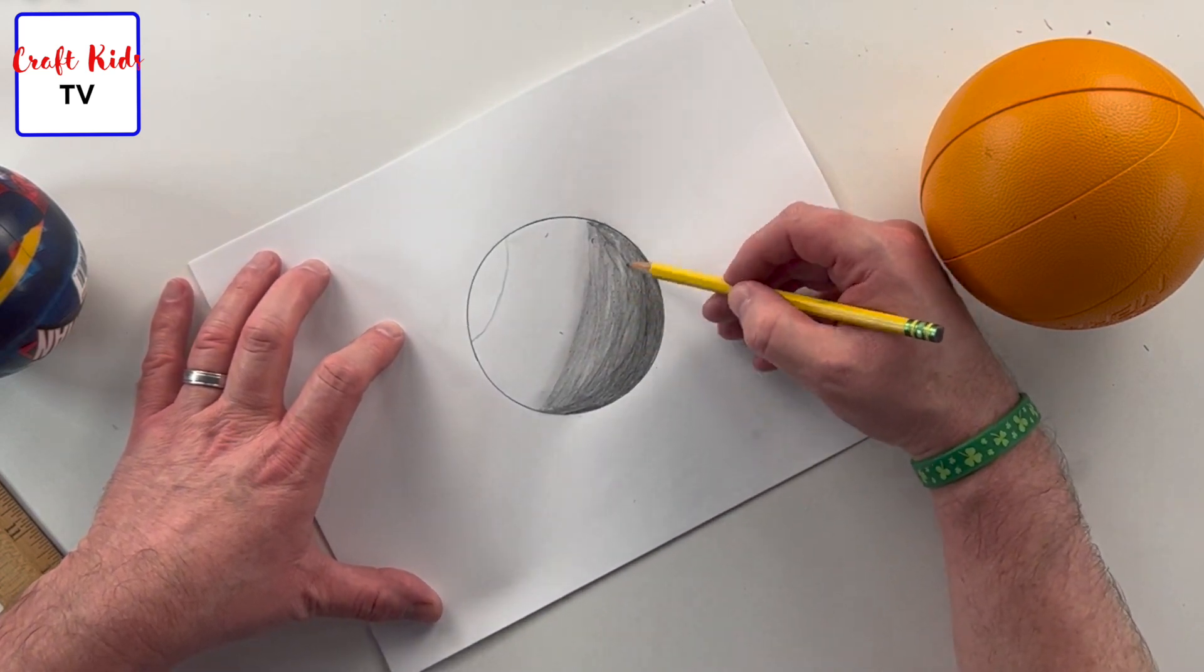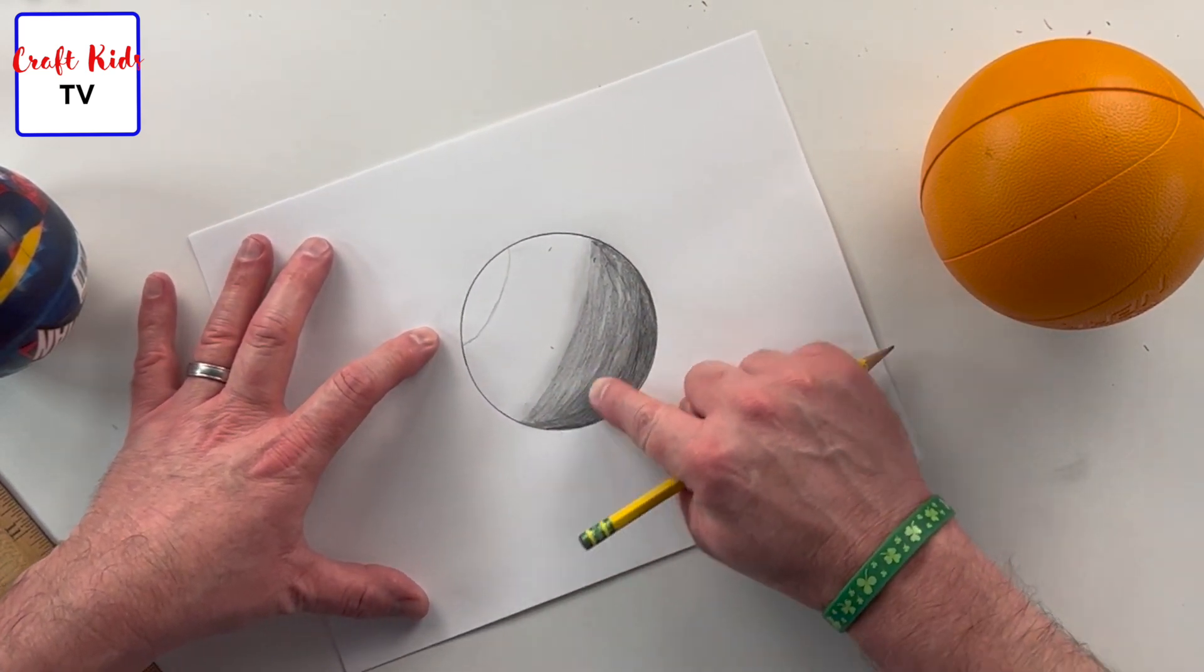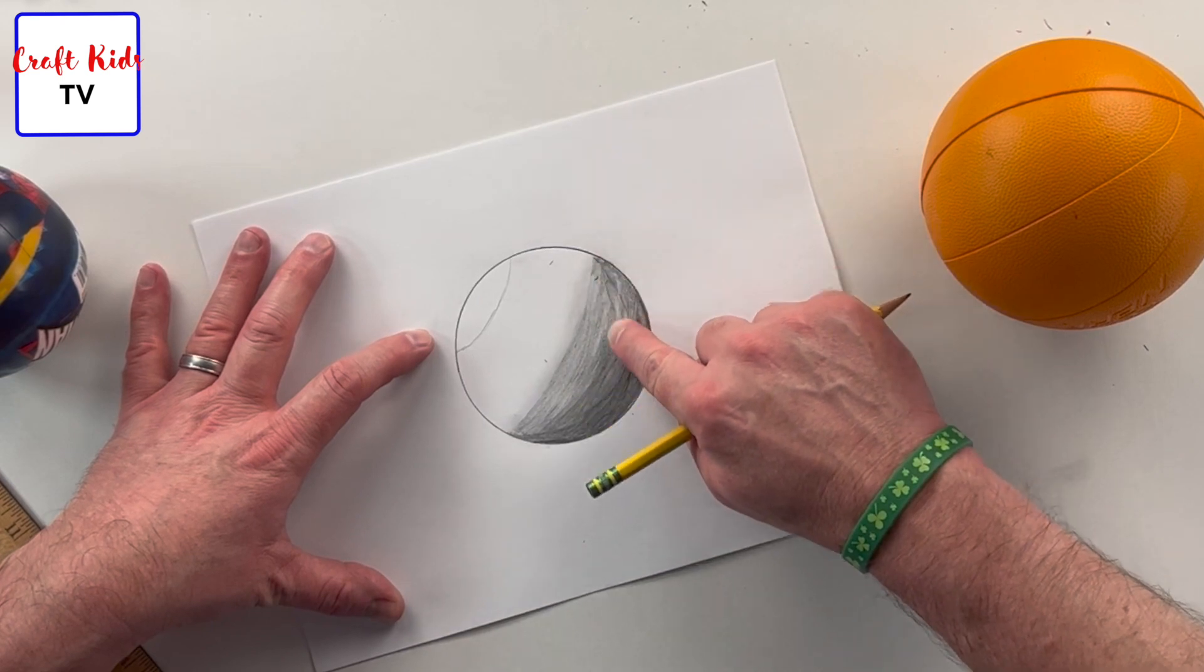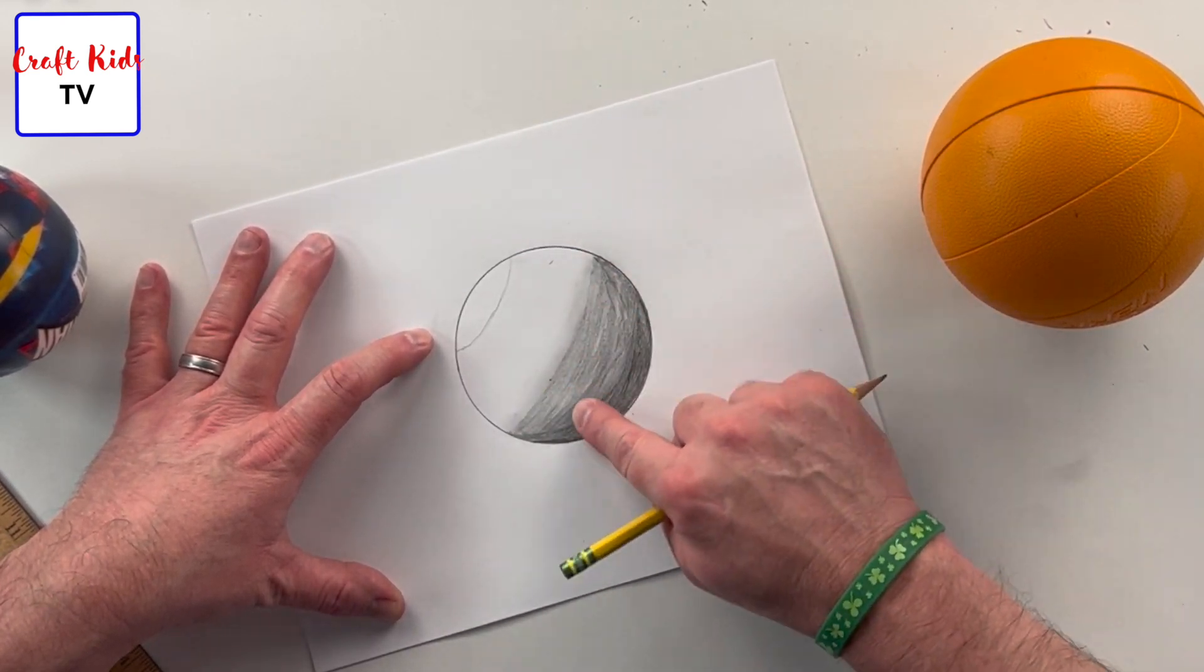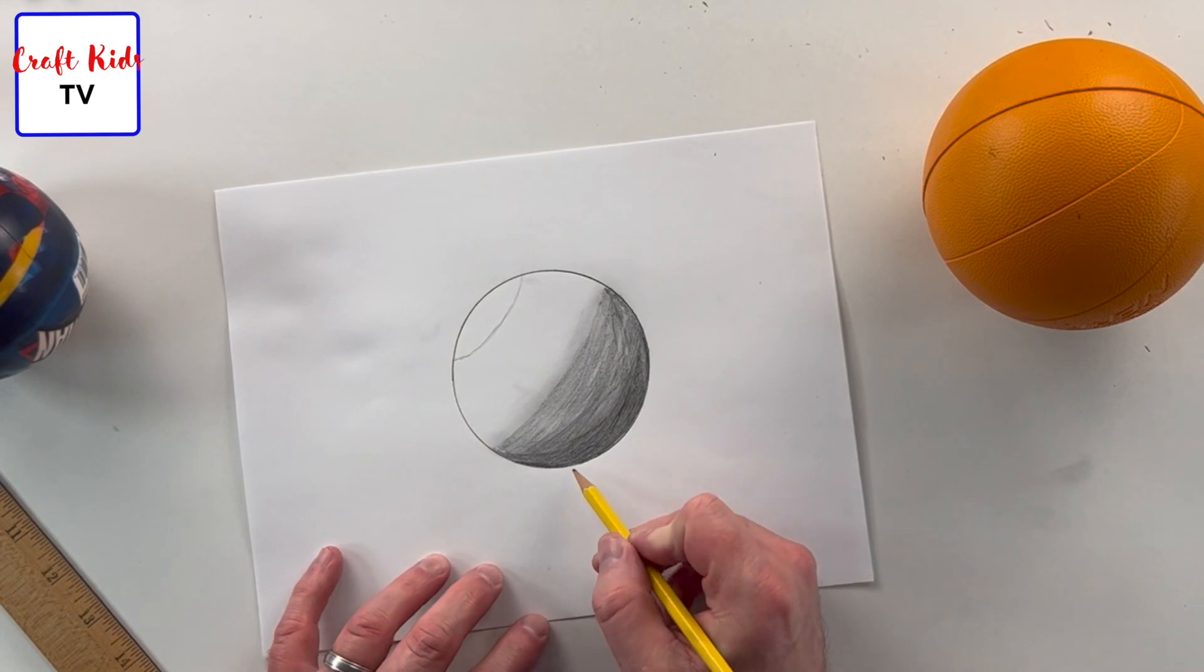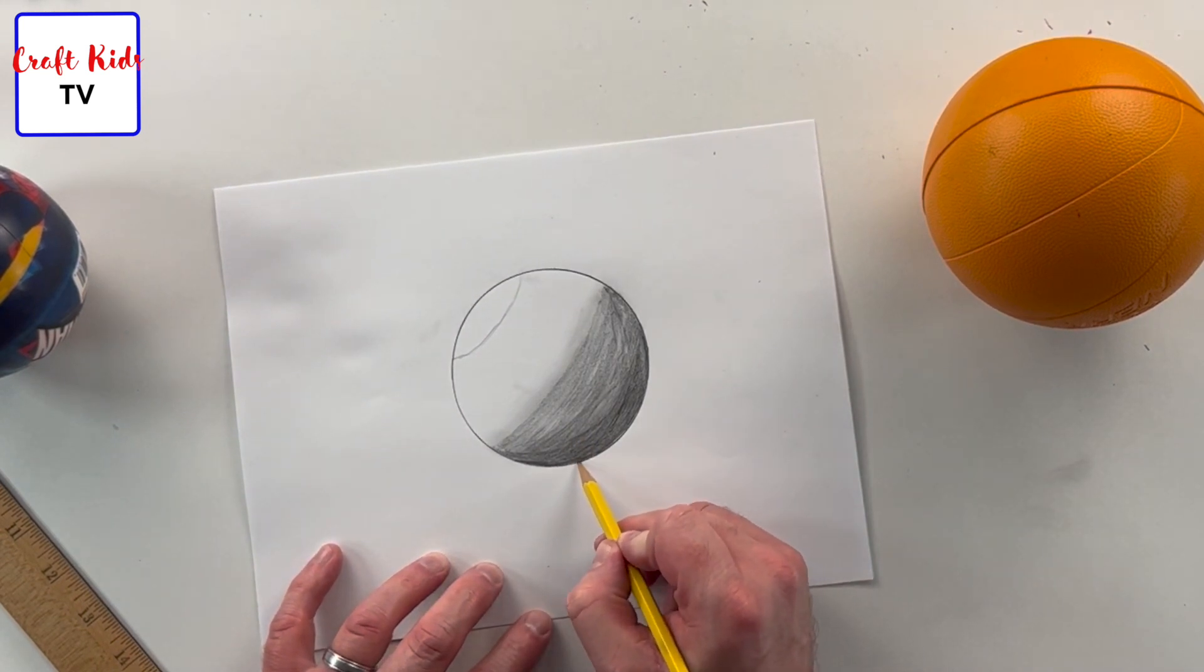I'm gonna shade that and then I'll smudge it a little. You get the general idea how that works, and it's shaded the darkest down here.